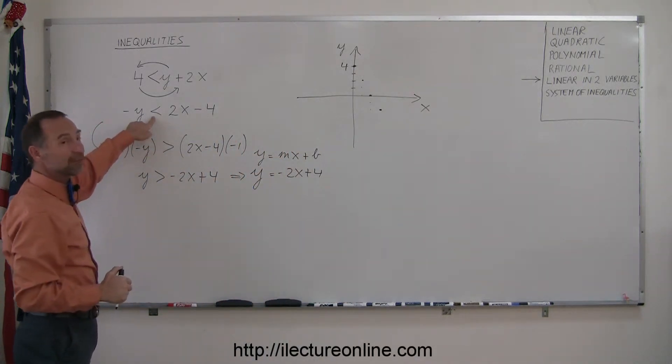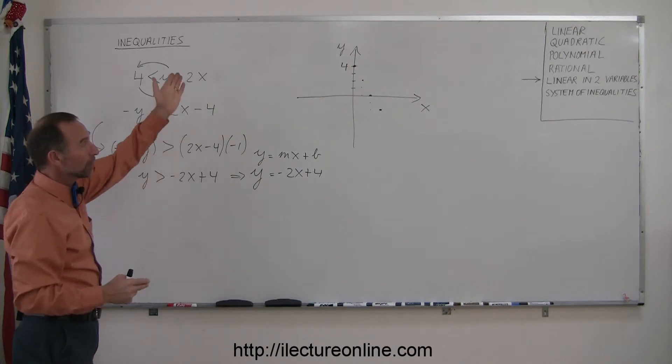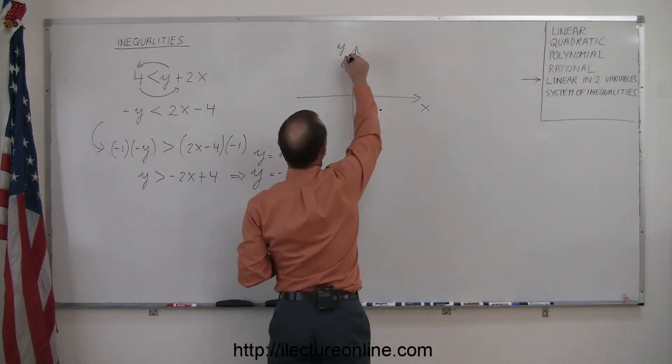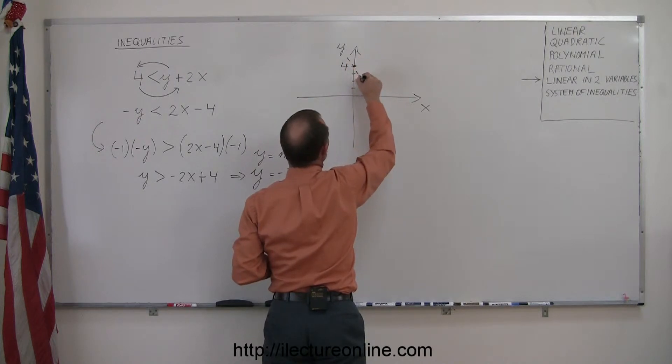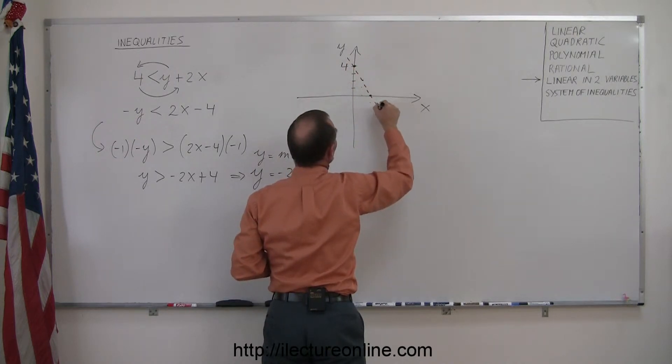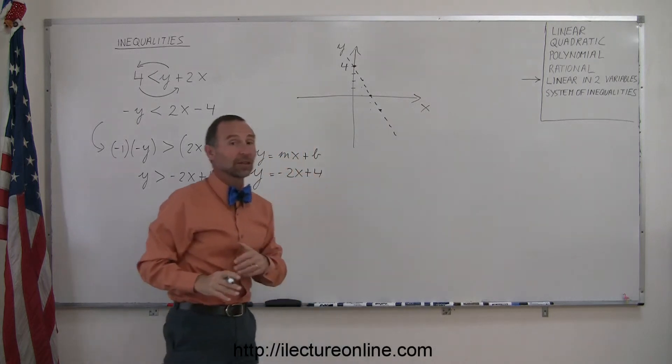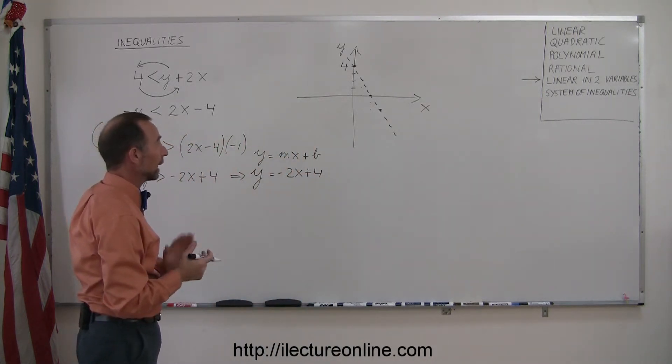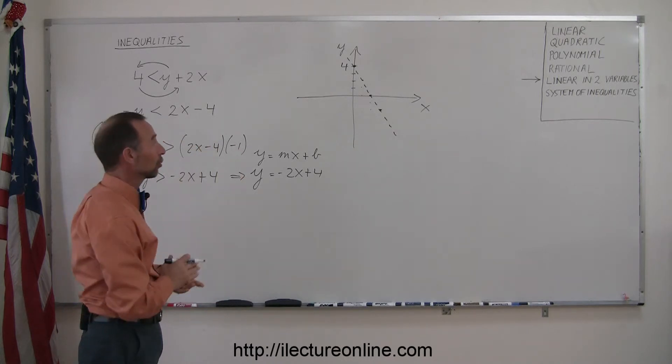Since we only have a less than symbol, not an equal symbol, the boundary itself is not part of the solution, which means we're going to draw a dashed line. The dashed line indicates the boundary between the region that satisfies the inequality and the region that does not, and the boundary is not included. Any points on the boundary is not part of the solution.